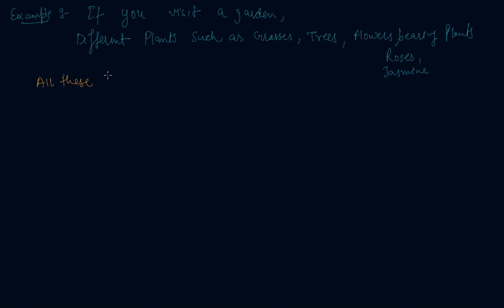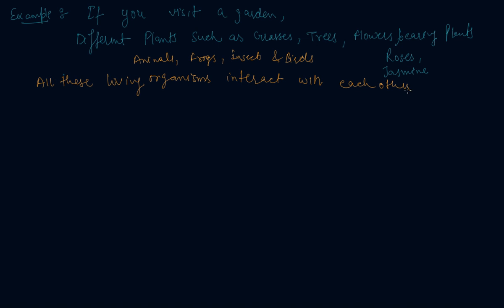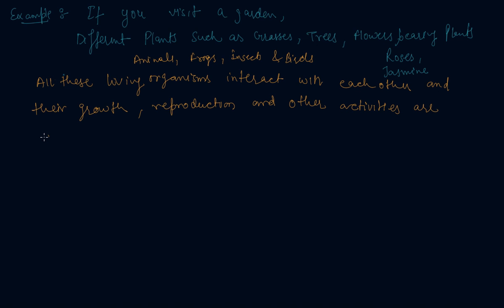Reproduction and other activities of these living organisms are affected by the abiotic components of the ecosystem, which we have discussed just now — what are the abiotic components of the ecosystem.